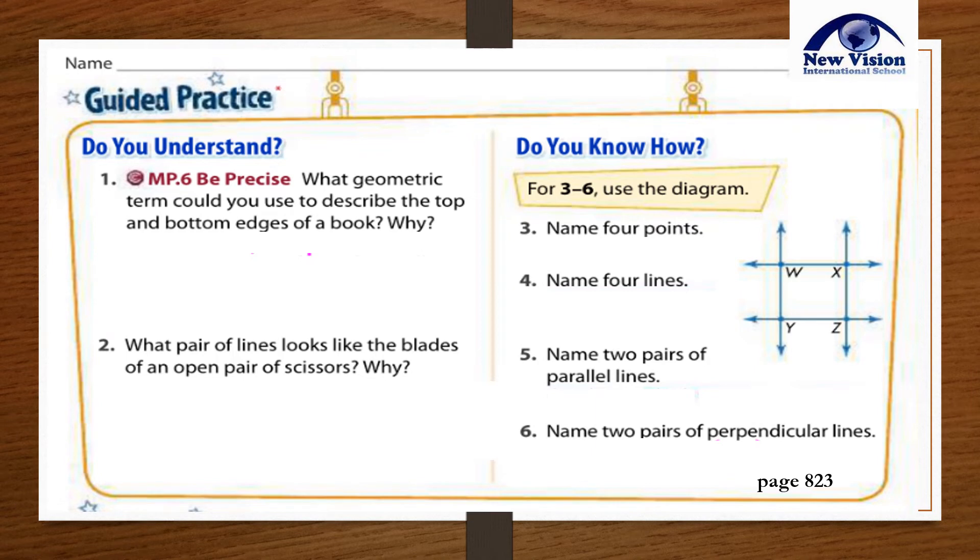Let's answer the guided practice. Do you understand? Number one: What geometric term could you use to describe the top and bottom edges of a book? Why? Answer: Parallel lines. They are straight lines that will never touch.